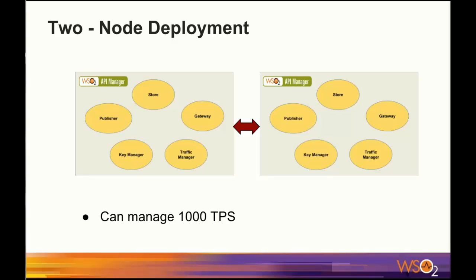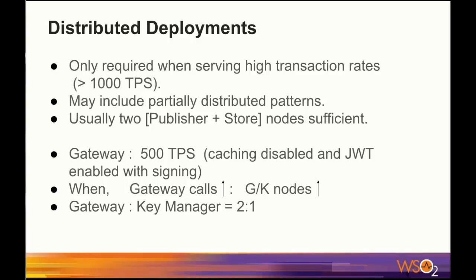Two-node deployment is there as a solution for that. It is actually two connected single server deployments. In normal conditions, two such nodes can manage up to 1000 transactions per second. In distributed deployments, API Manager components are started in separate servers, contrary to single server deployments. If you have more traffic to a particular component, you can easily scale and fine-tune only that component. These distributed deployments are required only when serving high transaction rates, and we can deploy partially or fully distributed patterns.